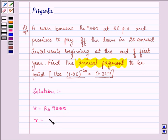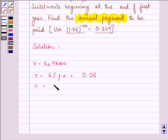We are given the rate of interest as 6% per annum which can also be written as 0.06 and the number of years are given to us as 20 years. We need to find the value of R.